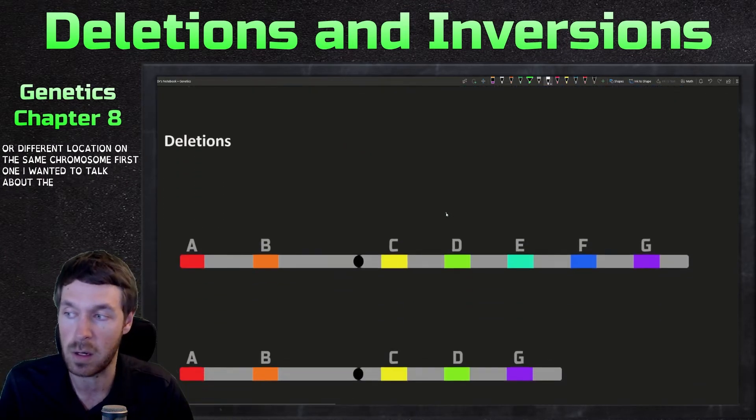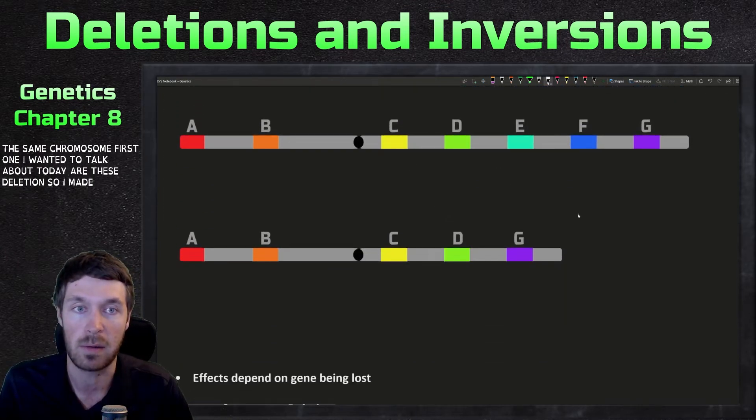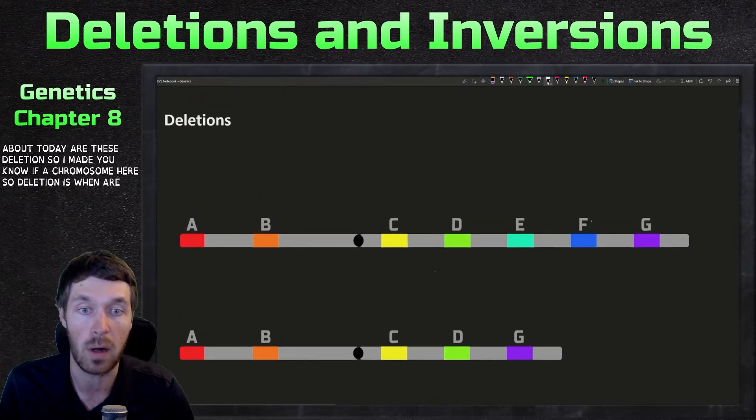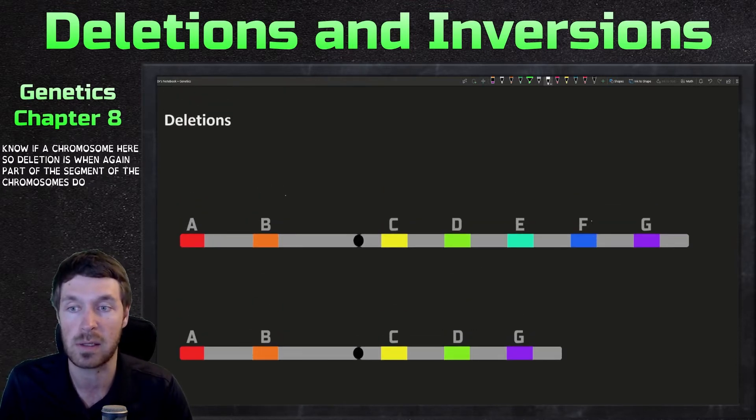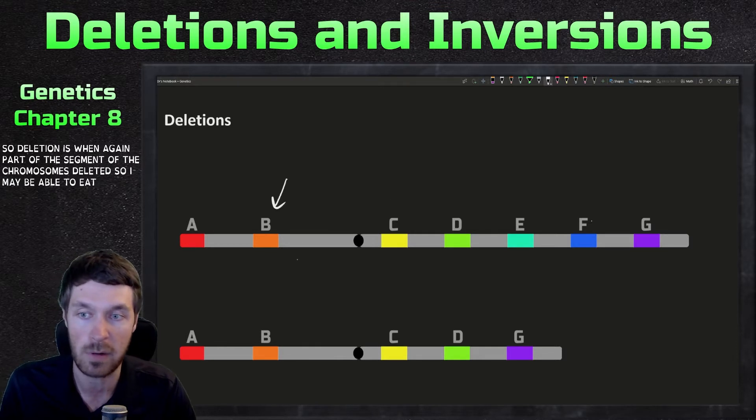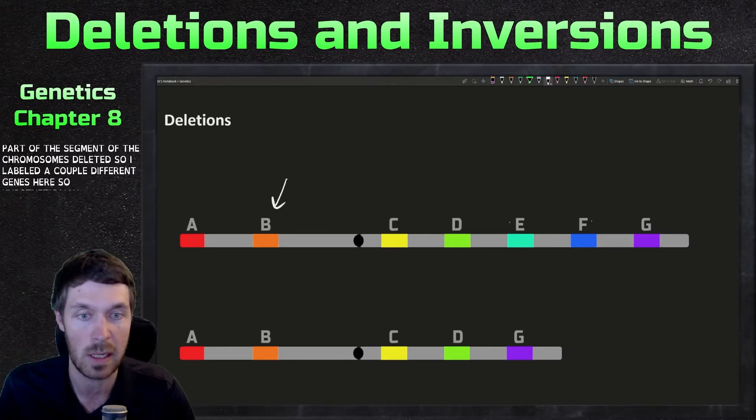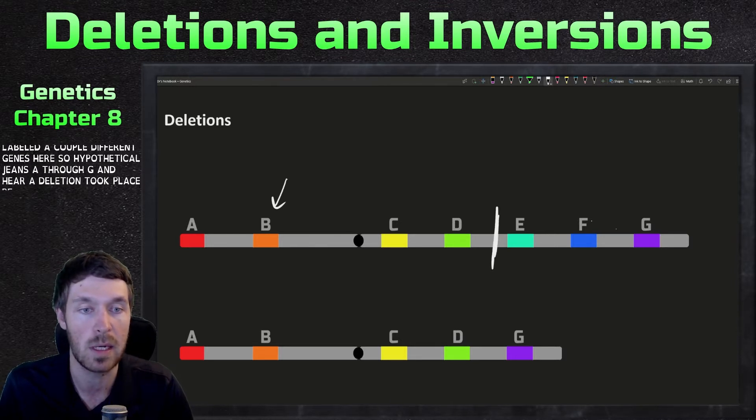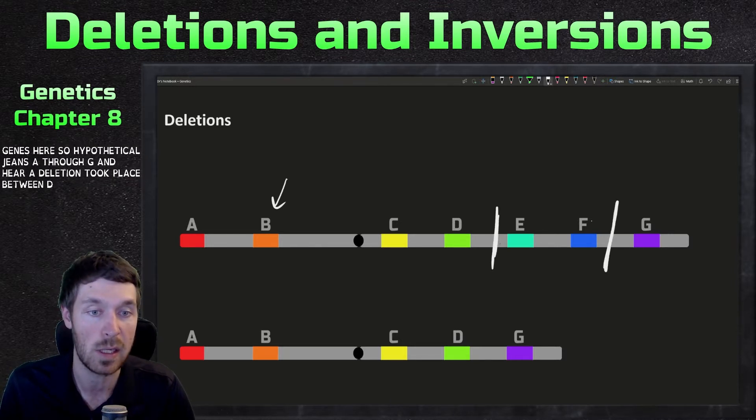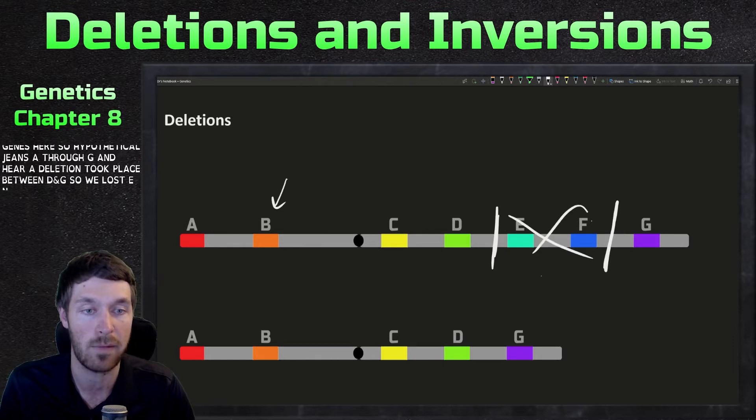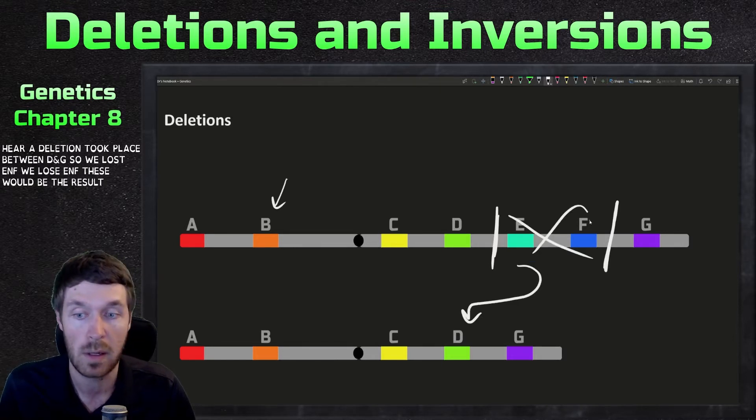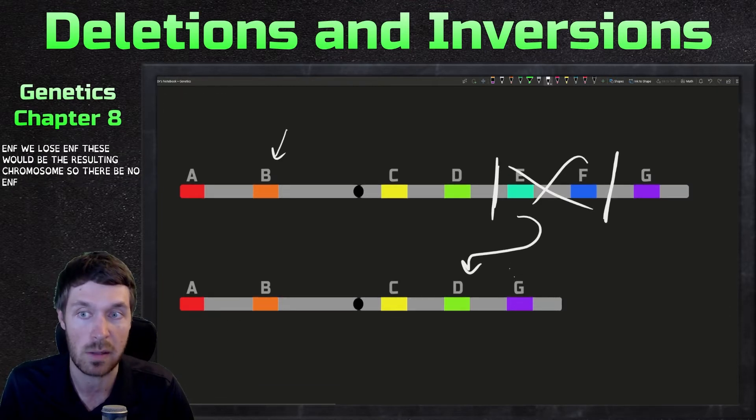All right, first one I wanted to talk about today are these deletions. So I made a fake chromosome here. Deletion is when part of the segment of the chromosome is deleted. So I labeled a couple different genes here, hypothetical genes A through G. And here a deletion took place between D and G. So we lost E and F. These would be the resulting chromosome, so there'd be no E and F gene.